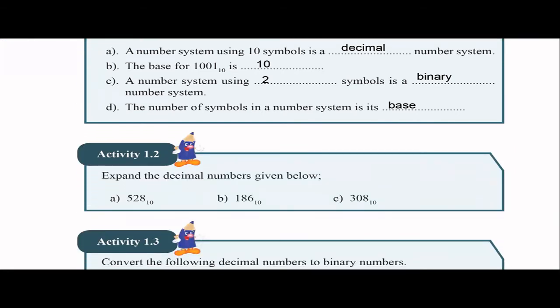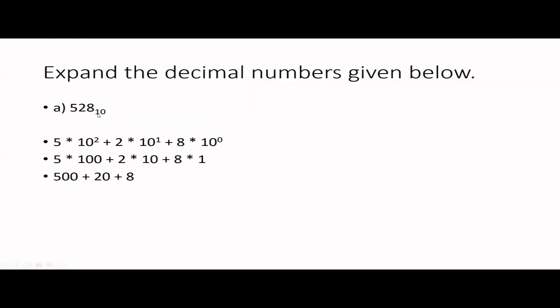Activity 1.2: expand the decimal numbers given below. The first one is 528, base 10. This is a number in the decimal number system, so you go with place values related to base 10. The weighting factors we use are 10 to the power 0, 10 to the power 1, and 10 to the power 2.